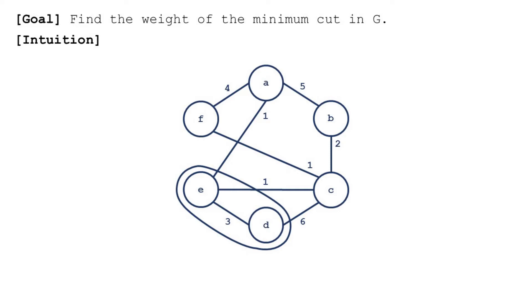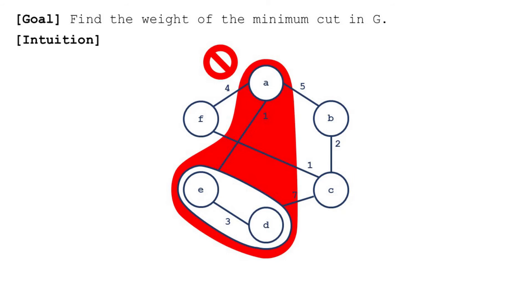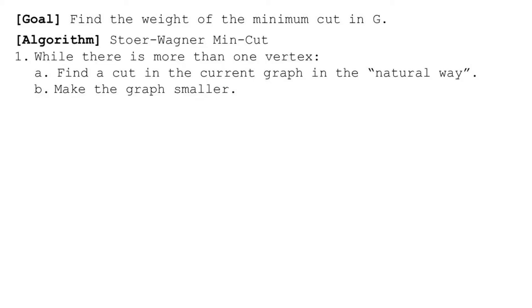This intuition also applies to sets containing more than one vertex. Consider a set containing vertices E and D. It helps to think of the set as a super node containing both vertices. The weight of the edges to the super node is the sum of the weights to the individual nodes. Here too, we want to add vertices whose edge to the super node has large weight, like C. We don't want to add vertices whose edge to the super node has low weight, like A — this might cause the large-weight edges to cross the cut.